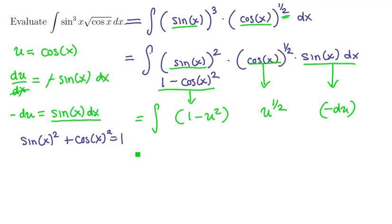And now we've got a completed substitution. If we clean this up, we have the integral of negative u to the one-half power, times 1 minus u squared du.